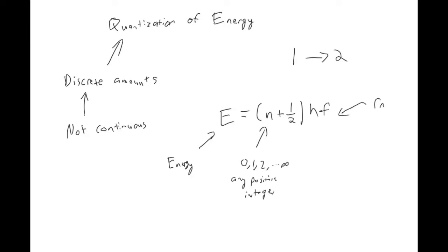F is a frequency. H is a new constant. This is called Planck's constant. It has the following value. The units are joules times seconds.